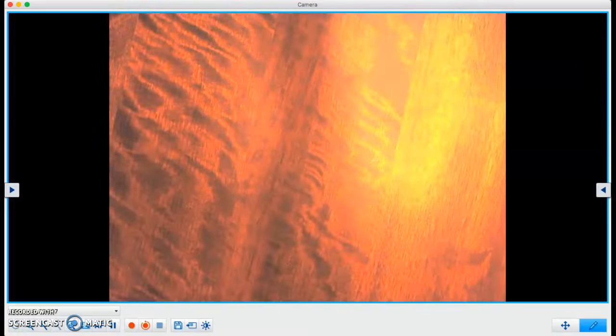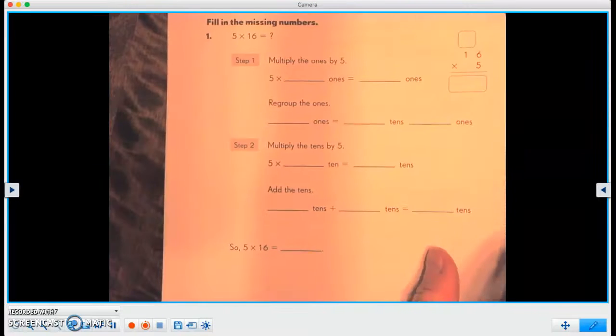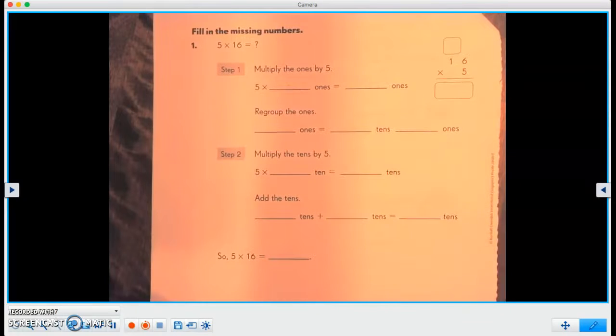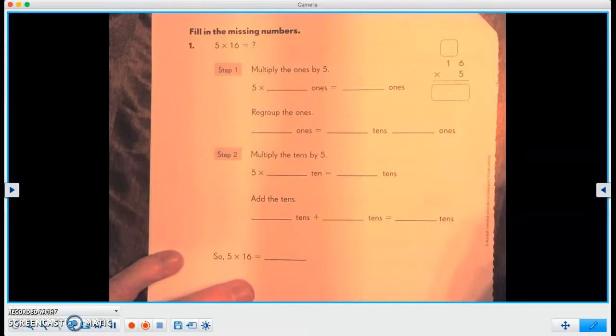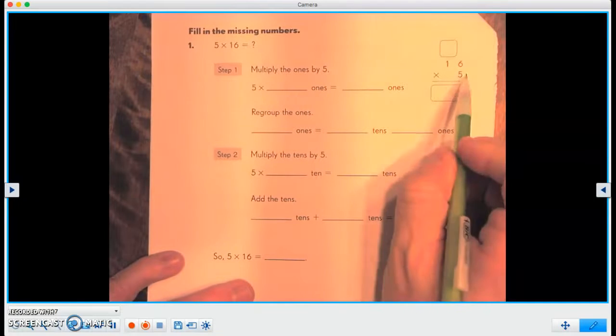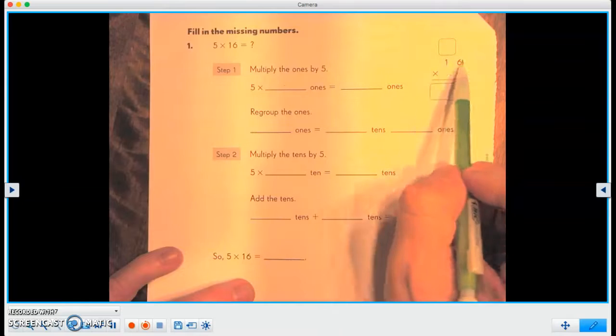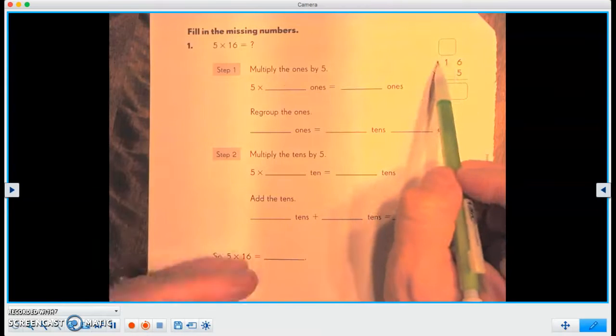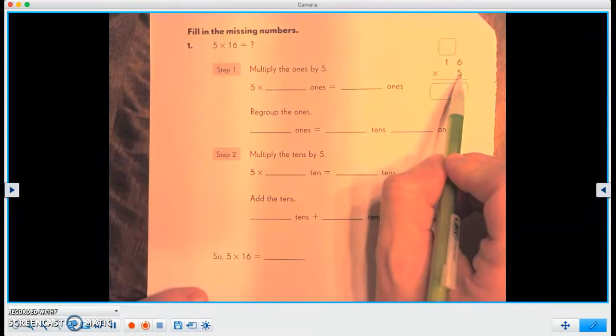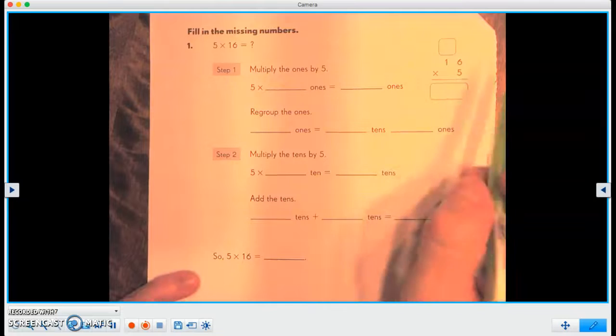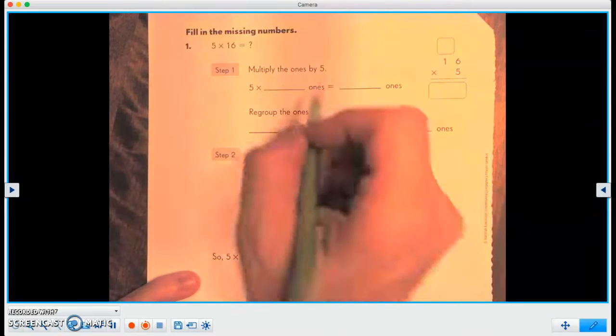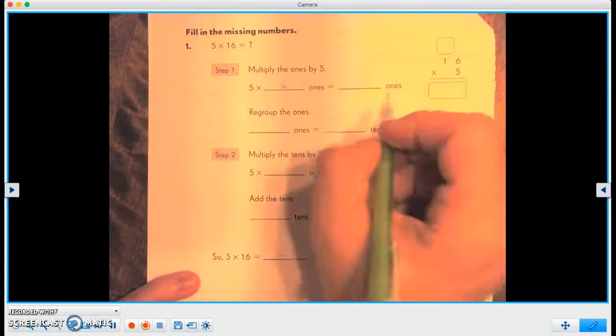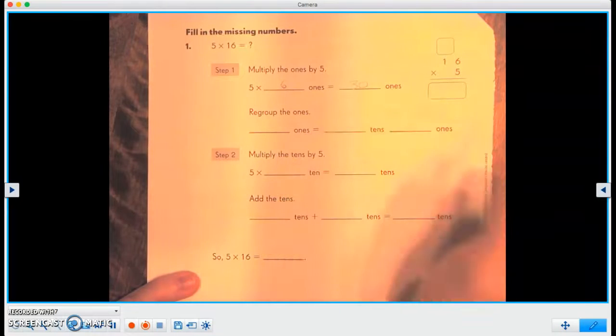So let's go ahead and check out number one. Five times 16, or 16 times five. So the first thing we're going to do is multiply the ones by five. Notice both the tens and the ones, or if we had more than that, they're all going to be multiplied by this number, okay? So five times six ones equals 30 ones.